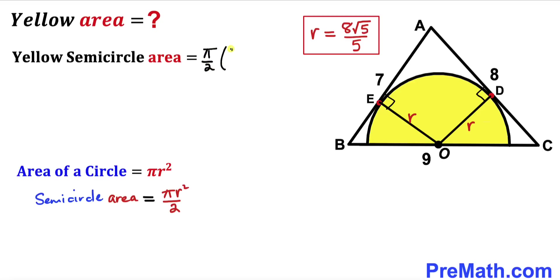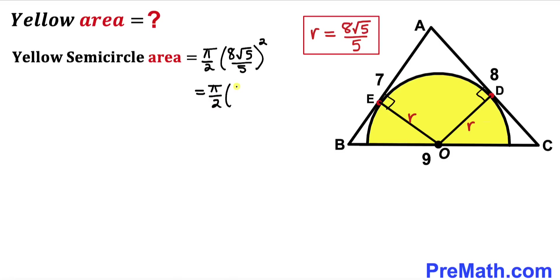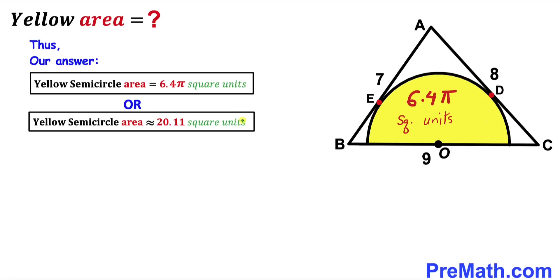Squaring the radius: (8√5/5)² = 64 × 5 / 25 = 64/5. So the area = π/2 × 64/5 = 32π/5 = 6.4π square units, which is approximately 20.11 square units. Thanks for watching, and please don't forget to subscribe to my channel for more exciting videos!